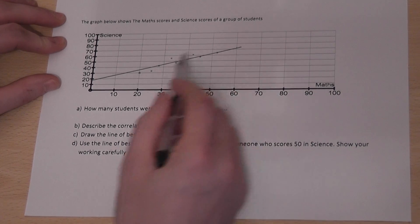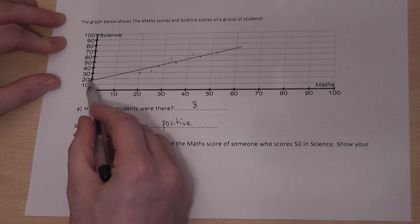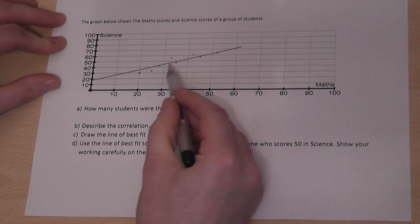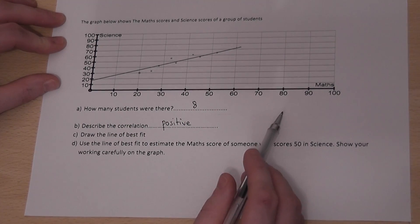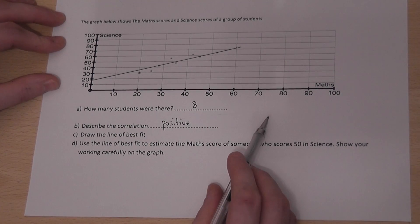So again, the line does not start at the origin. It passes through the centre of as many dots as possible. Now I can use that line to estimate.